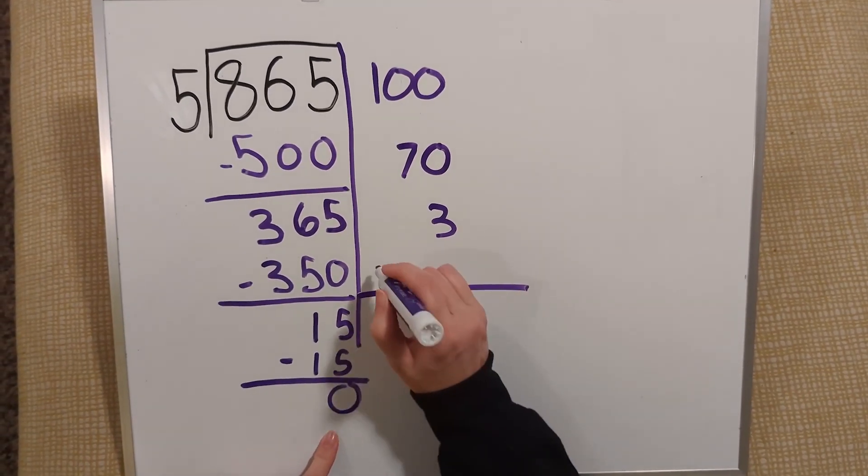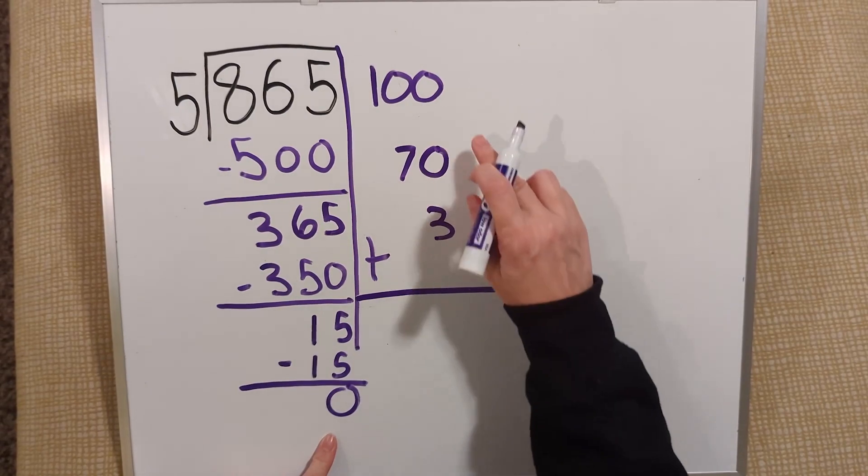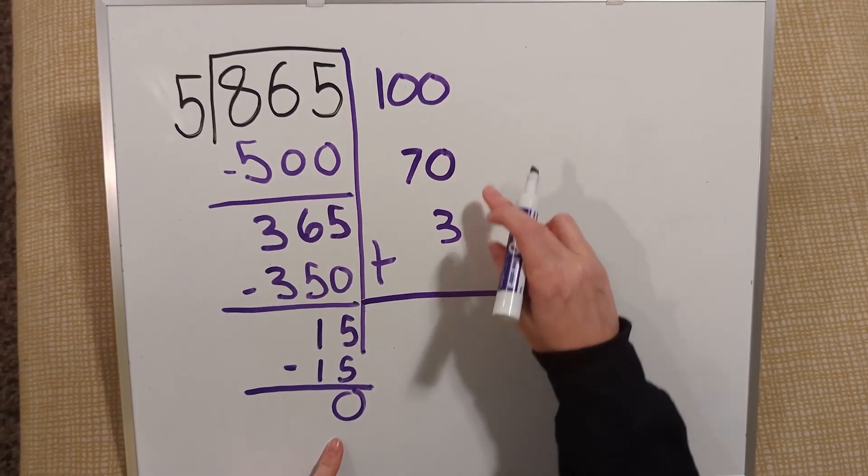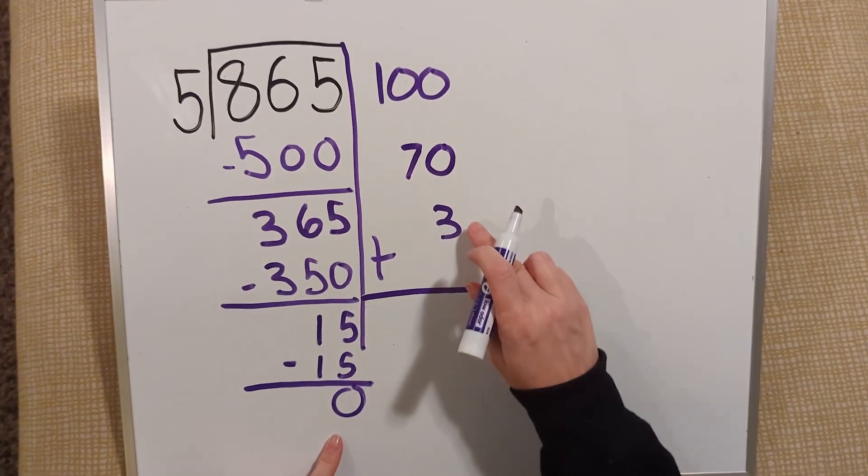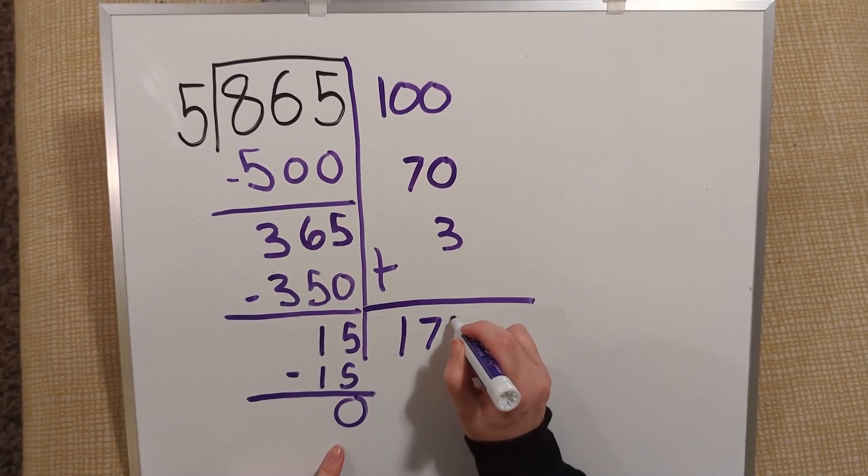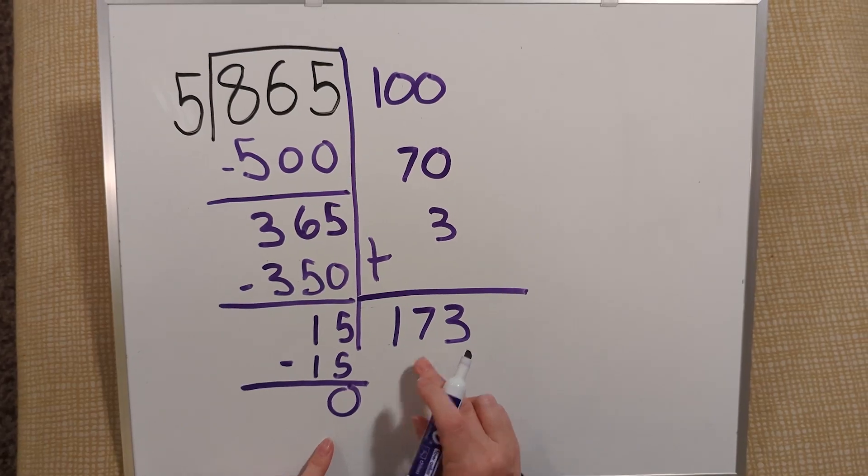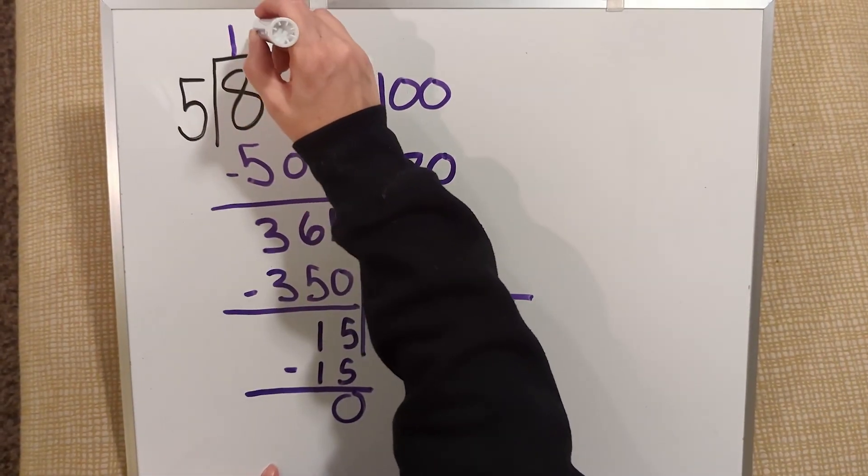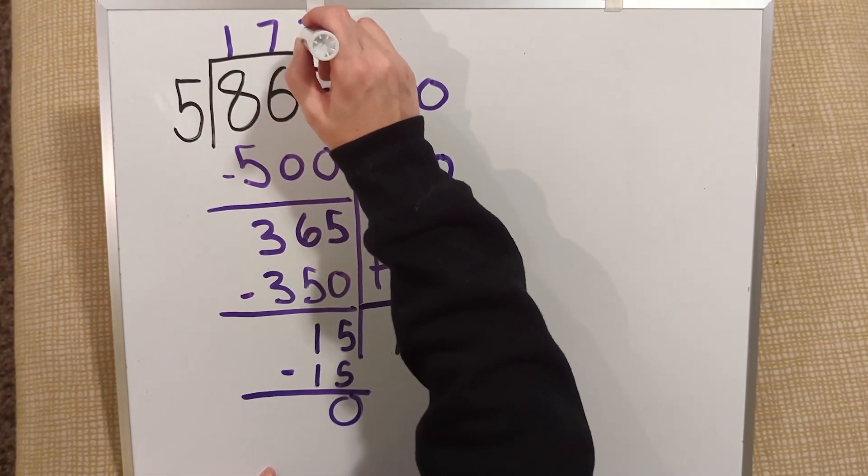Now I add my partial quotients up. 100 plus 70 plus 3 is 173. This is my quotient. 173.